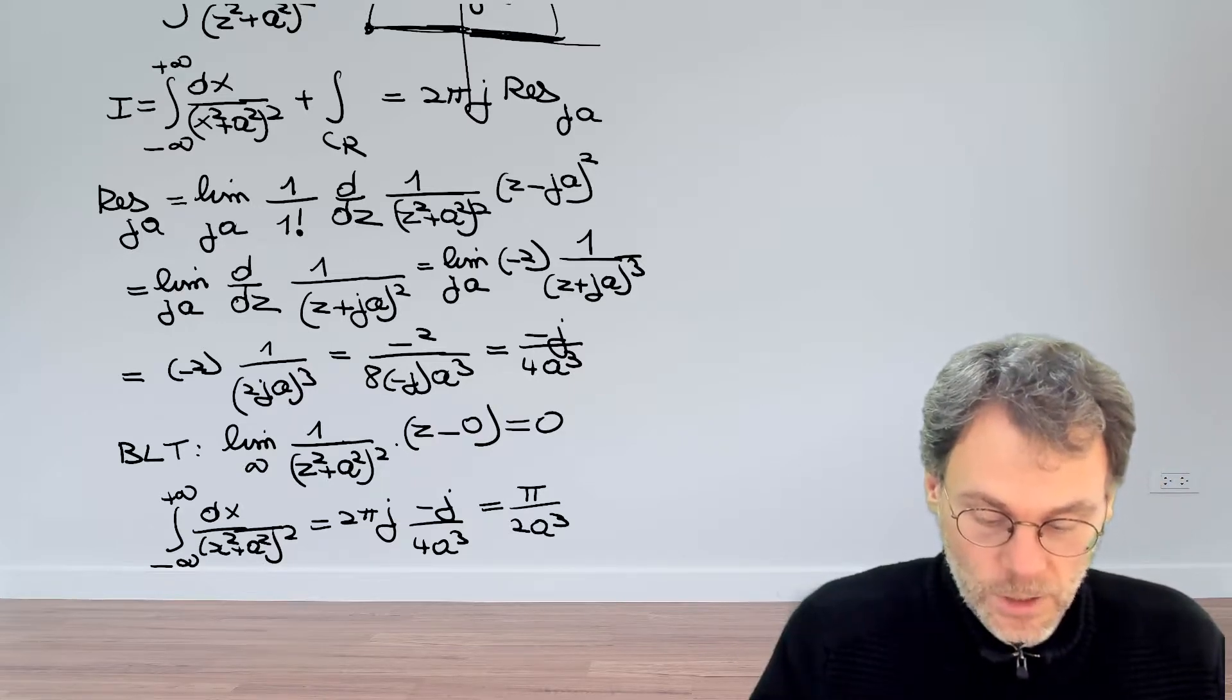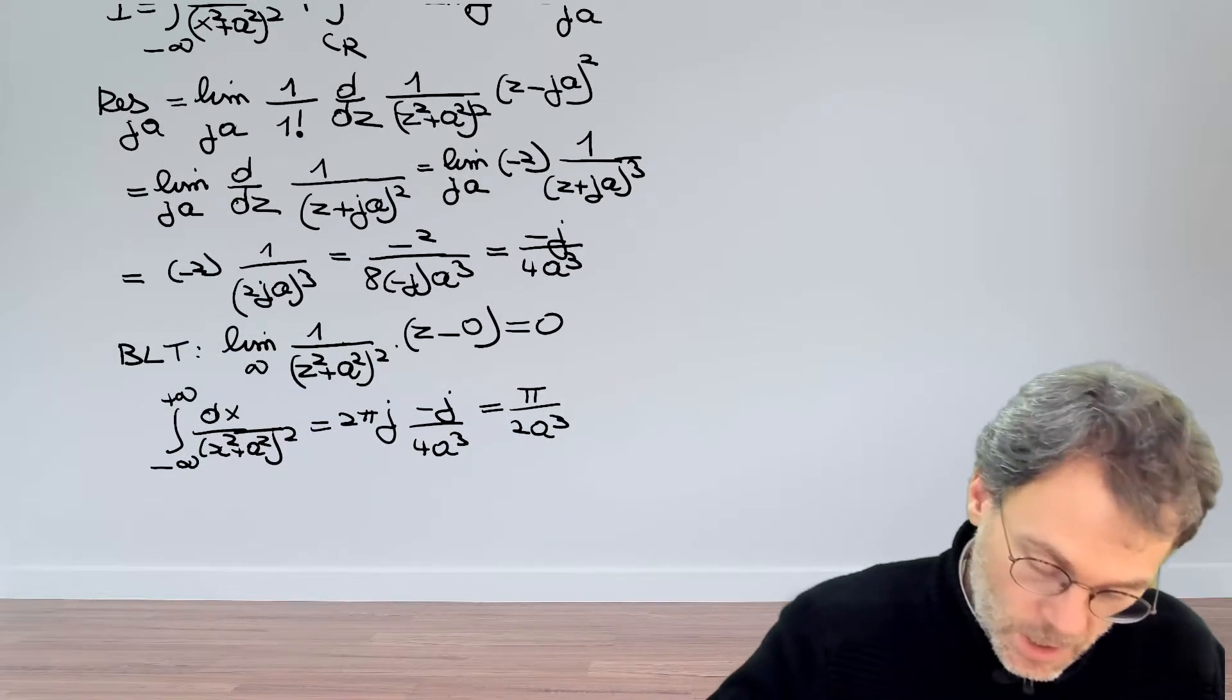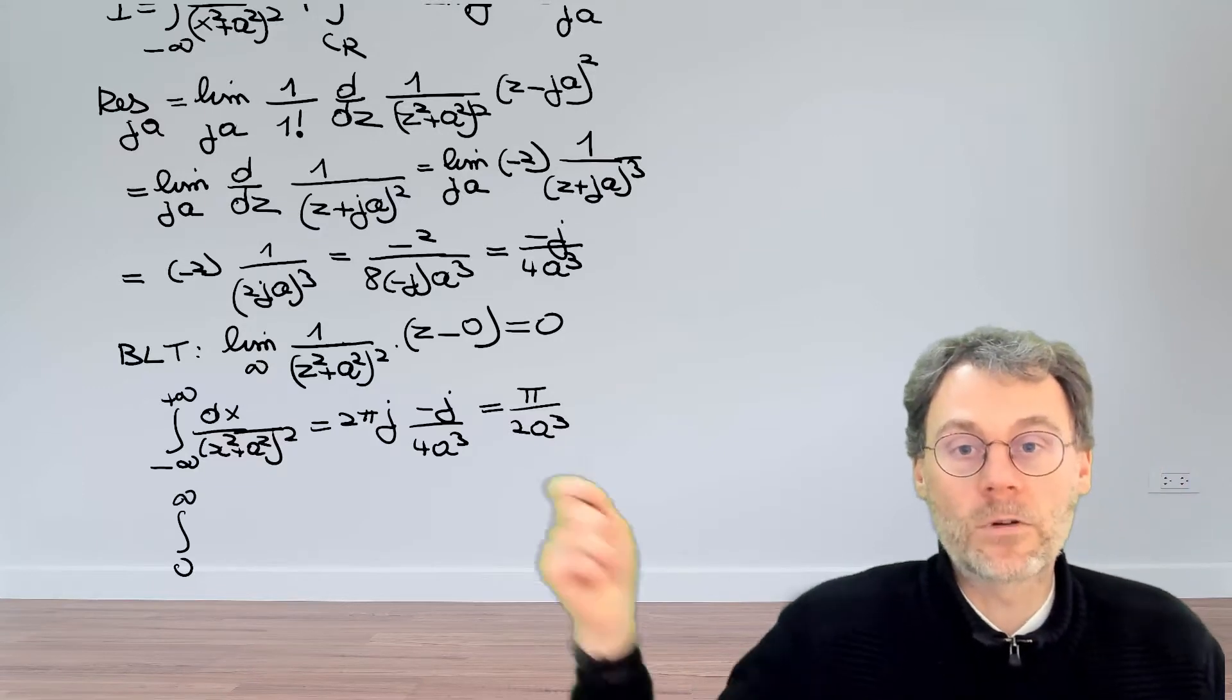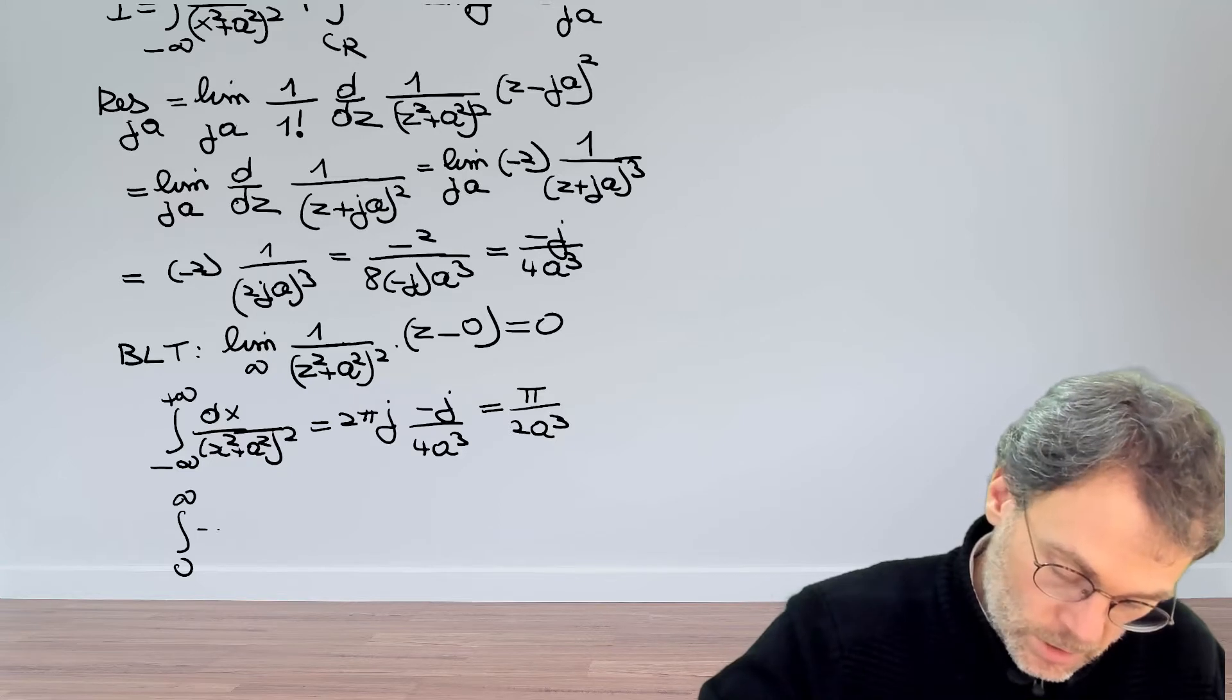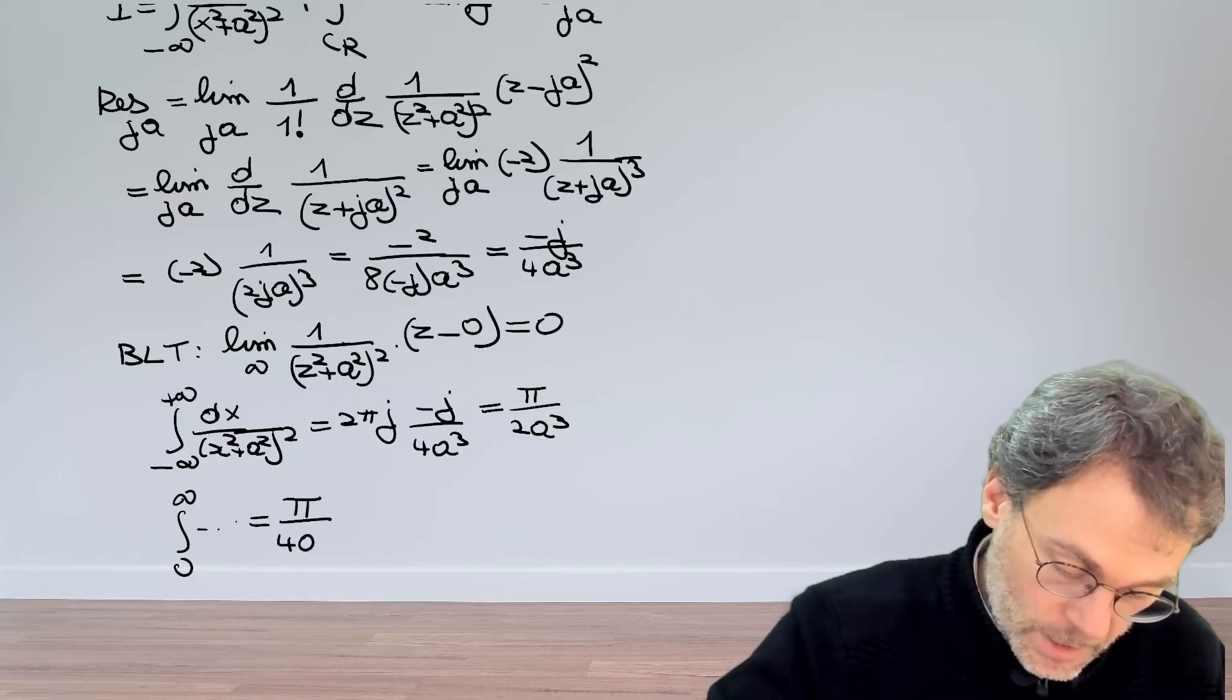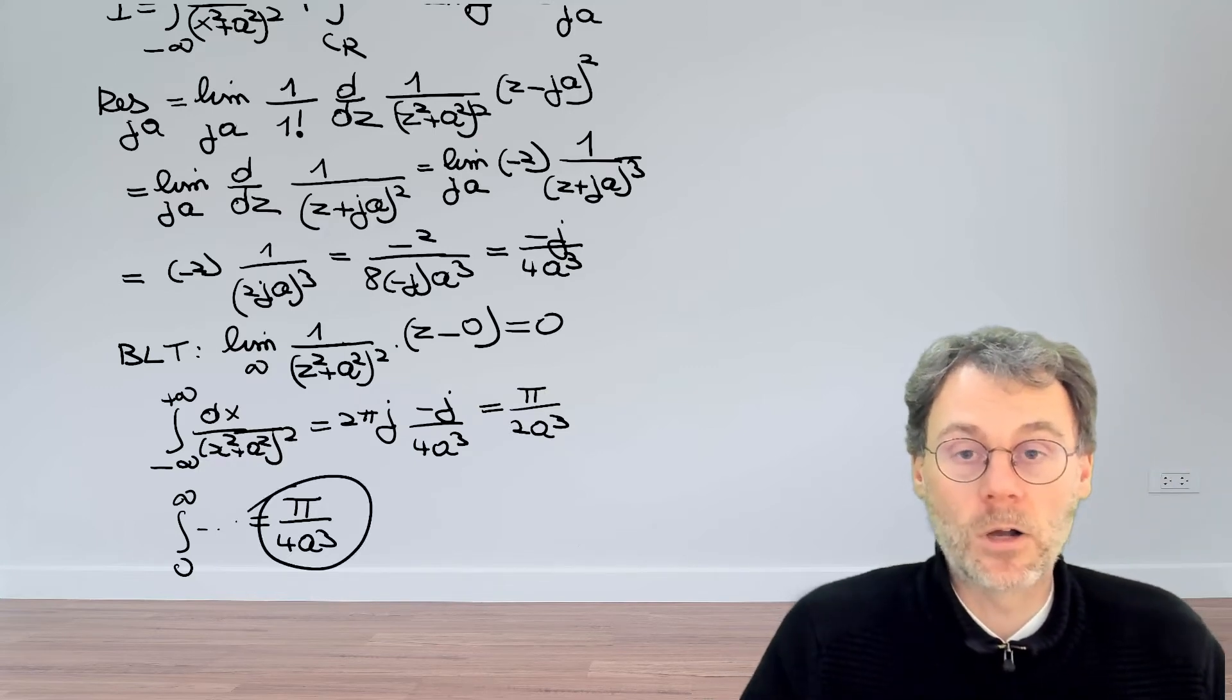However, the question that we needed to answer was not the integral from minus infinity to plus infinity, but rather the integral from 0 to infinity. However, this function here is extremely even, so we can just divide our results by 2 to end up with π divided by 4a cubed. And there we have it, that's our end result.